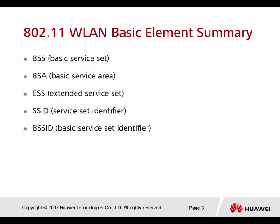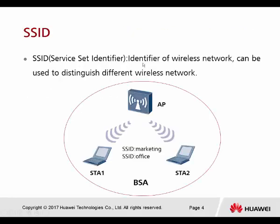Here we have some of the basic element summary. We have the BSS, which stands for basic service set. Then the next one is BSA, basic service area, ESS, extended service set, SSID — this is the very common name that we know — and the last one is BSSID. So SSID is the identifier of the wireless network, and can be used to distinguish different wireless networks.